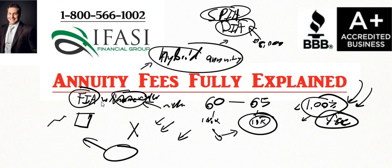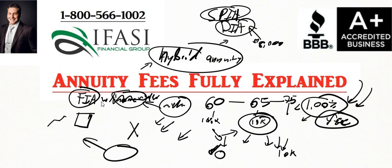Some hybrid annuities do not have any fees; the majority do have fees, usually right around 1% or less — those are the ones I like to see. That fee has to be justified. If there are no market gains and your account value hits zero after 10 years, the insurance company is still on the hook to pay you $10,000 every single year to the day you pass away. That individual could live to their hundreds and that $10,000 would still remain. Majority of hybrid annuities have a fee, but that fee is necessary.